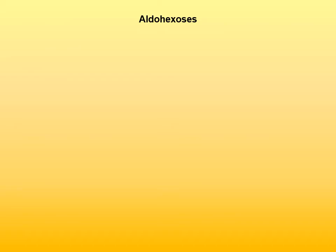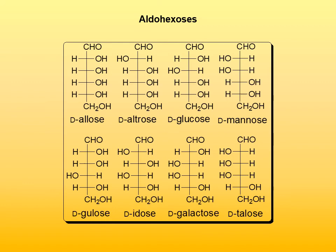Aldohexoses have four chirality centers, meaning there are 16 possible stereoisomers — 2 to the power of 4. Eight naturally occurring D-enantiomers are shown here. Glucose in the top row, third from the left, is the most important and most abundant monosaccharide in nature. Next to it is mannose, also very important. Galactose is important as well. Each of the eight aldohexoses has its own name.